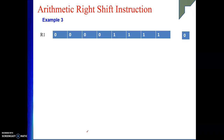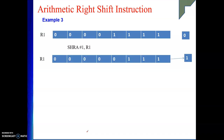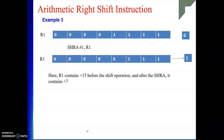Next is another example. R1 contains a different value. This time we have seen a positive number. Before the operation is applied, R1 was containing plus 15 — four ones represent 15. After the operation is applied, it will be plus 7. Do remember, it is an integer division, so the answer is 7.